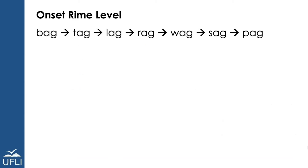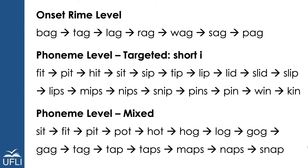Also remember, as you're building word chains, to think about the level of difficulty. Are you focusing just on onset-rhyme level changes? Or if you're focusing on phoneme level changes, do you want to target a particular sound and only change the other sounds — such as keeping the short i in every word? Or are you going to have mixed phoneme level changes, where the initial, medial, and final sounds all change? You also want to think about whether you're going to include nonsense words. Nonsense words are useful because they force the student to really focus on decoding — they can't rely on having seen the word before. They're also helpful when constructing a word chain because sometimes it's difficult to think of a word to bridge two words, and a nonsense word can help in that circumstance.